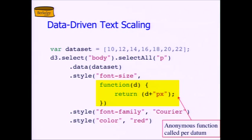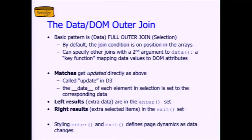You have access to both of those, and then you can do things with them. Matches get updated directly, as in the code we just saw — they get passed along down the method chain. If you go look in the web inspector, the way the join works, deep down inside, is that the data element gets copied into the HTML — copied into the DOM as an attribute of name __data__. So what D3 really does is it takes that data item and copies it into the DOM element with that key.